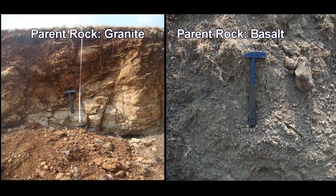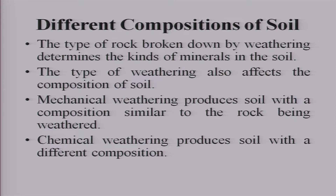Different compositions of soil can be formed by different parent materials, so parent material controls the chemistry of soil formation. If mechanical weathering is dominant, the composition of the soil will essentially mirror that of the parent rock. But if chemical weathering is dominant, the soil composition will be different from that of the parent rock.